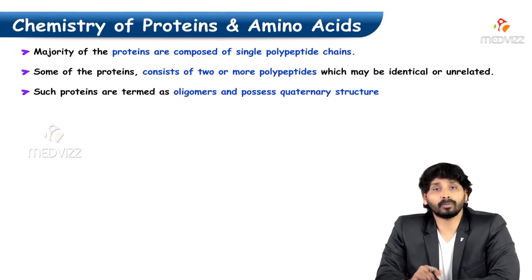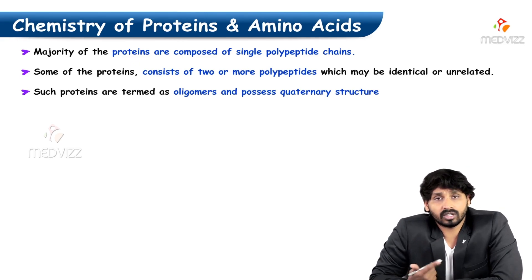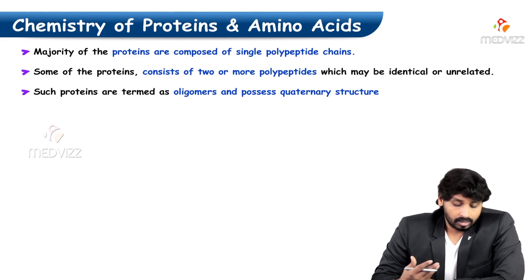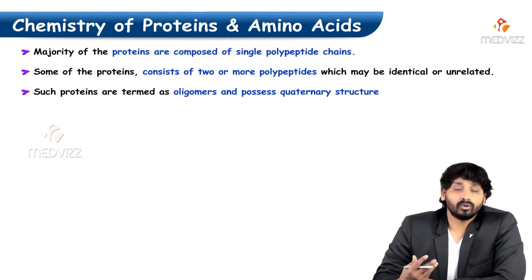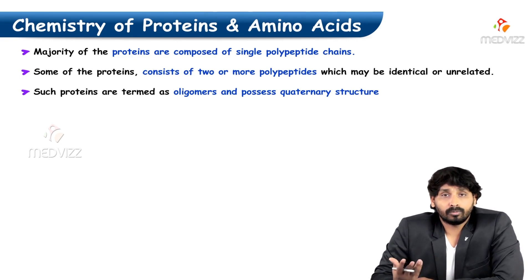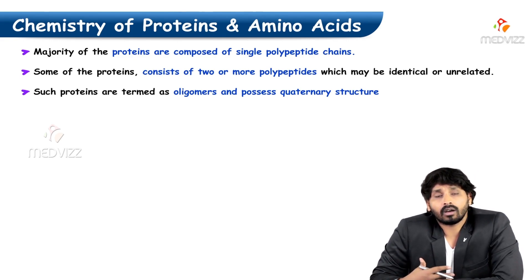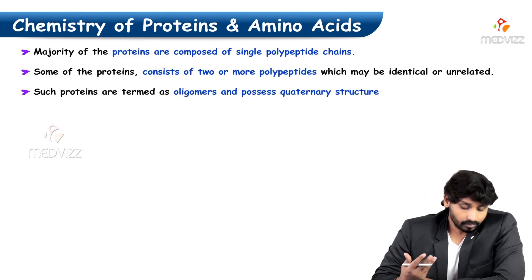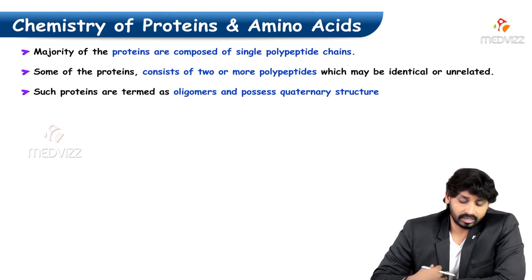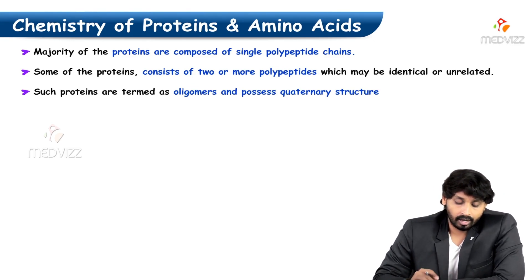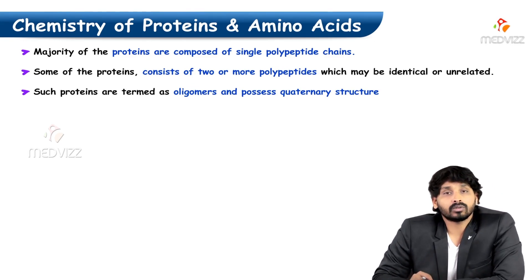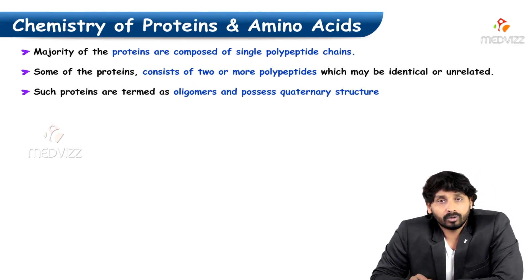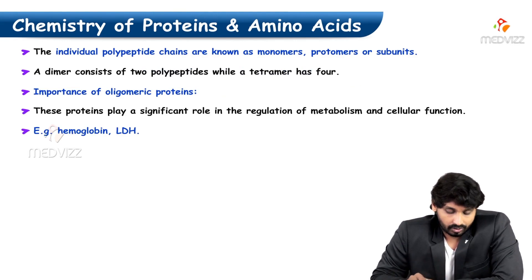The majority of proteins are composed of a single polypeptide, but some proteins carry more than two polypeptides which may be identical or non-identical. Such proteins are termed oligomers, and all these oligomers contribute to the Quaternary Structure.